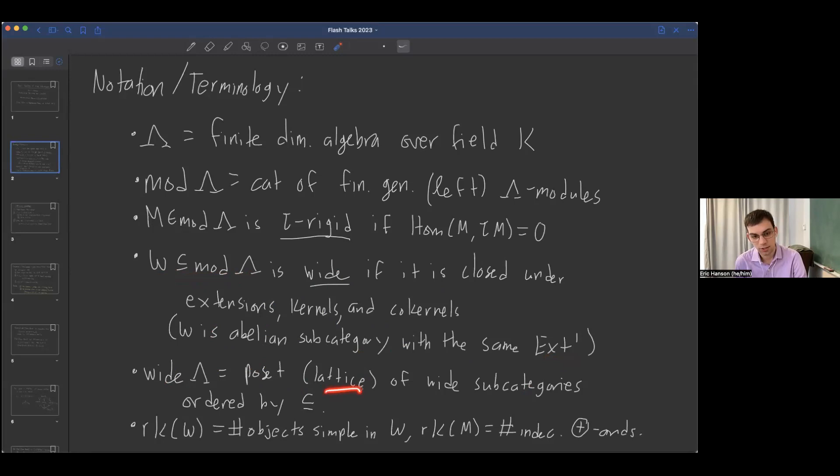Wide of lambda is the poset, it actually has a lattice structure, of wide subcategories where the order is given by inclusion of subcategories. For a wide subcategory W, I'll use rank of W to be the number of simple objects in W. And for a module, I'll use the rank to mean the number of indecomposable direct summands.